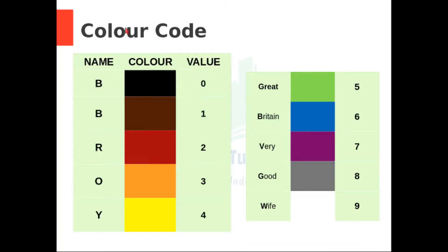Where the first B stands for black, next B for brown, R for red, O for orange, Y for yellow, G for green, B for blue, V for violet, G for grey, and finally W for white.